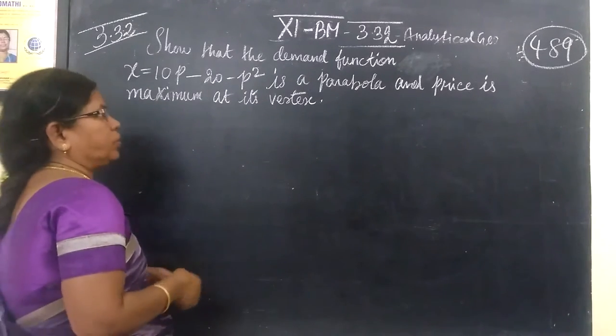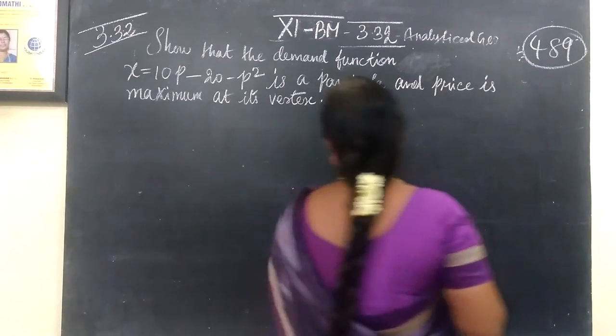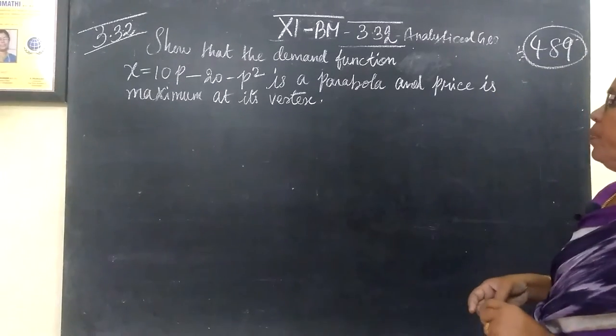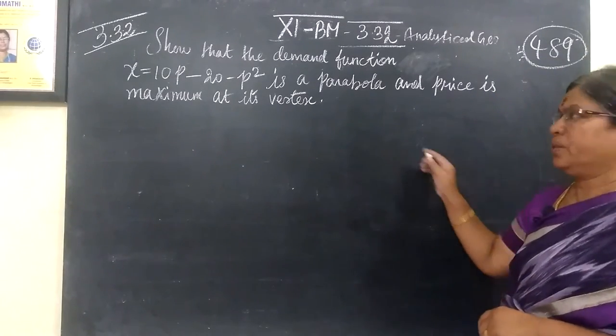So next it is given that the demand function is a parabola and the price is maximum at the vertex.